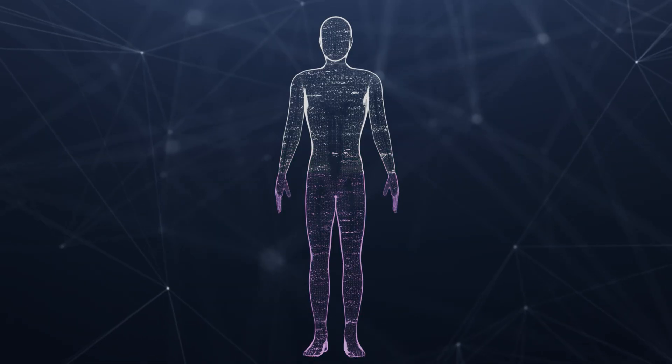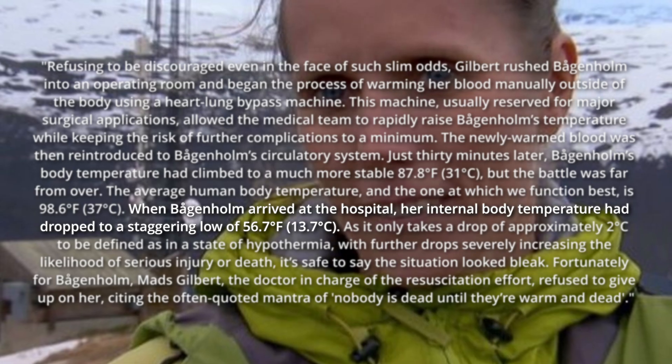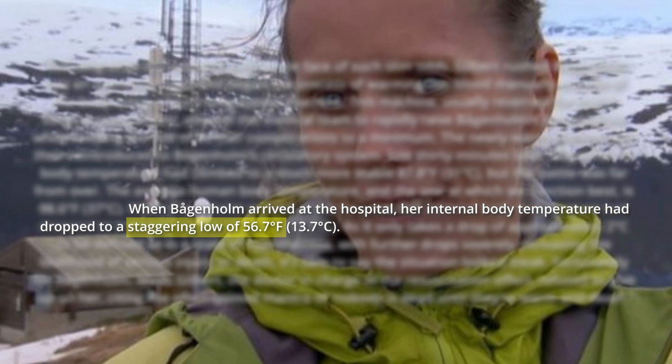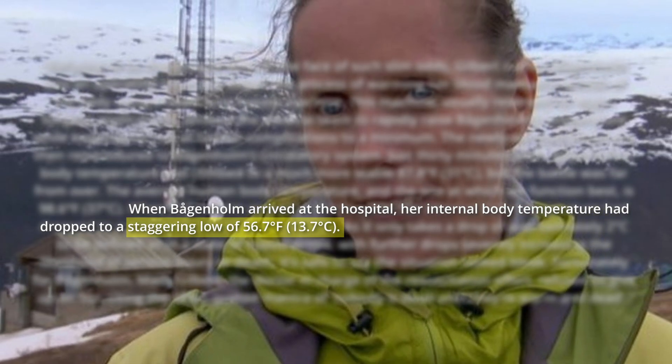Core temperature can dip surprisingly low before becoming fatal. In 1999, a Swedish woman was resuscitated after being trapped under ice despite a body temperature of 56.7 degrees Fahrenheit, an astounding 42 degrees below normal.